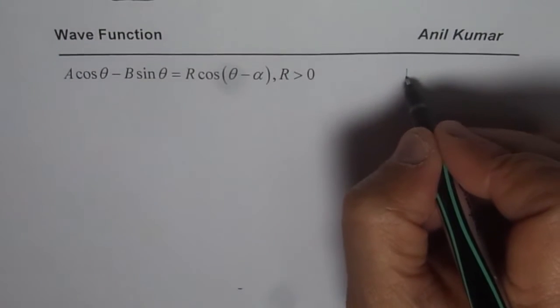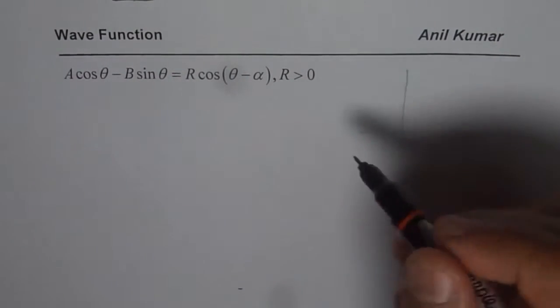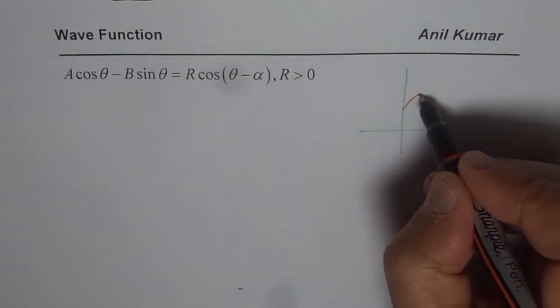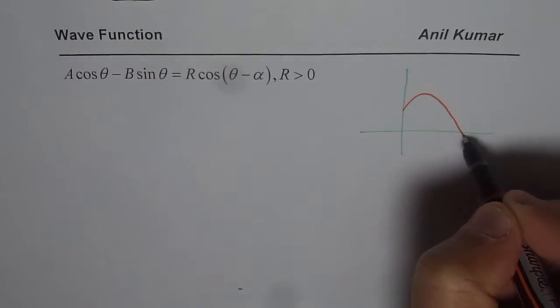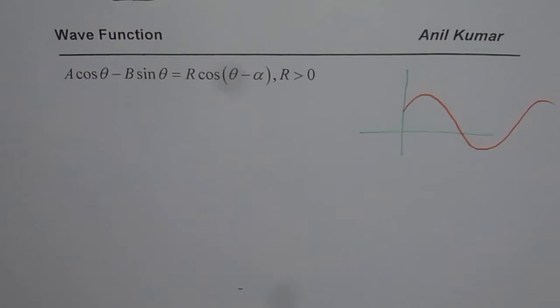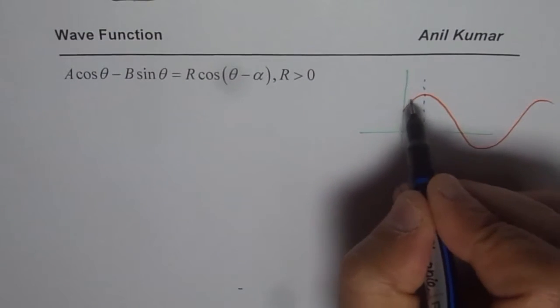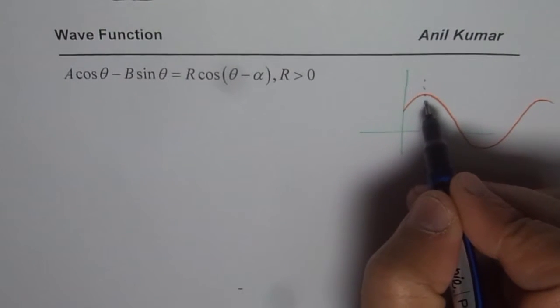If you sketch this function you get a graph which could be like this, for example. So it will be a stretched out sine wave, slightly shifted to the right if you are looking from the cosine angle.